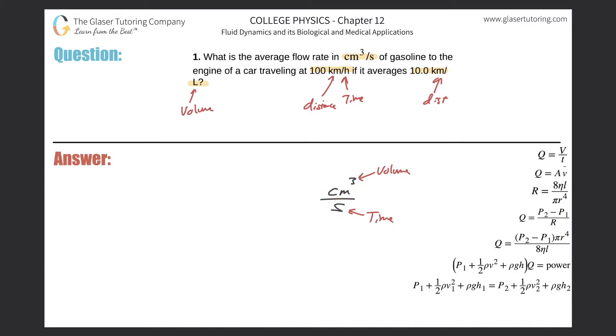I need my volume in the numerator, and out of these two values, the volume is in the second one. That told us it was 10.0 kilometers per one liter. But notice I need the volume in the numerator, so I'm going to flip this fraction. I'm going to have one liter over 10.0 kilometers.